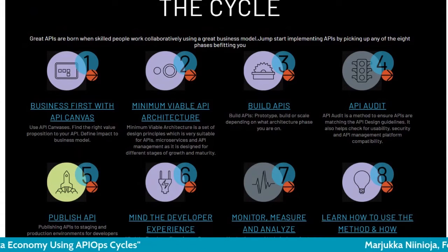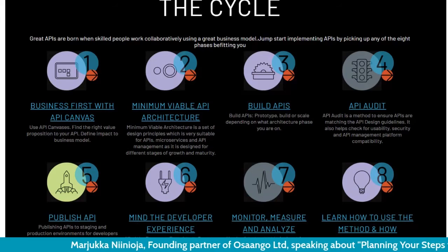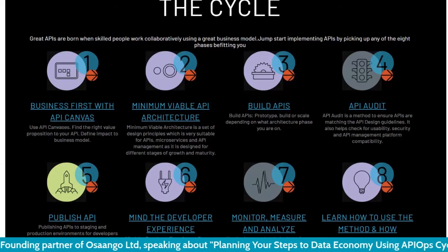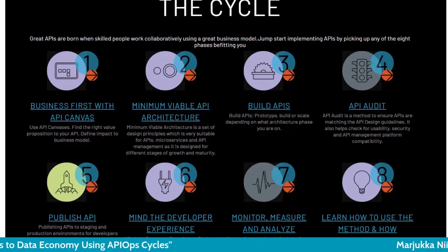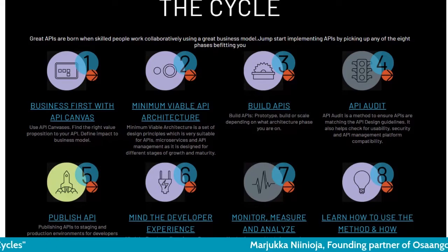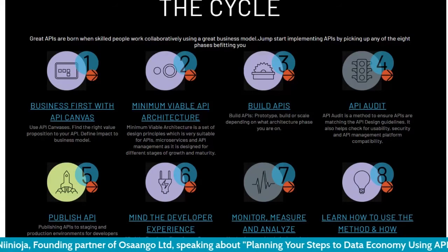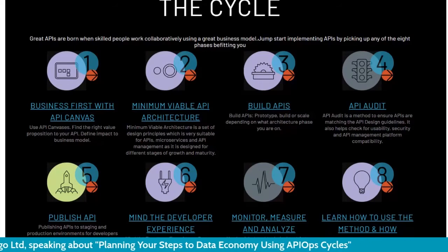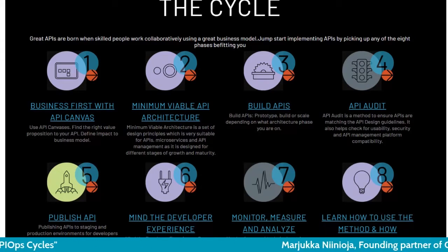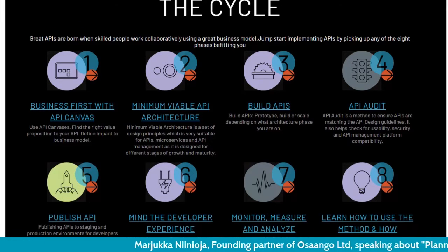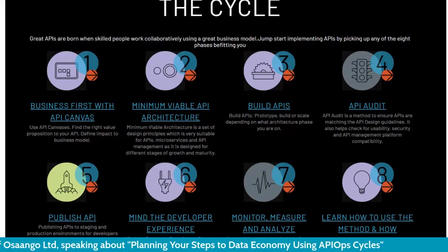Here's the cycle in a nutshell. You first start with value proposition canvases and business model canvases — slightly API-fied versions. Then you move into architecture cycles where you start with a minimum viable API architecture, prototype first, build something that works, and then scale after some cycles. The method doesn't tell you exactly how to build APIs, but it tells you what to consider when building them — specifically helping you audit APIs for good design principles, security, manageability with an API management platform, and good developer experience.